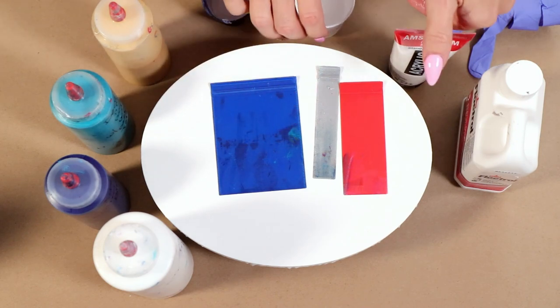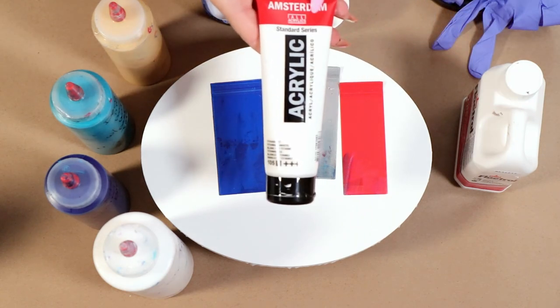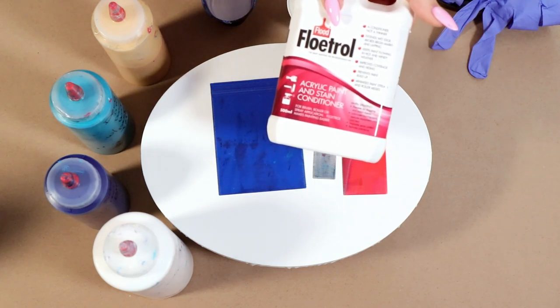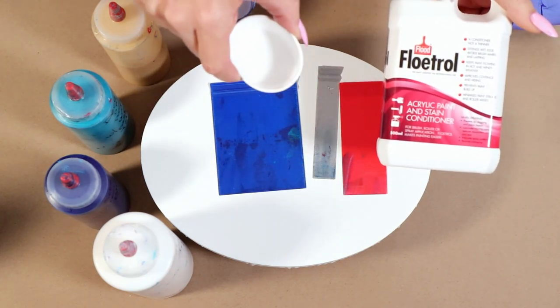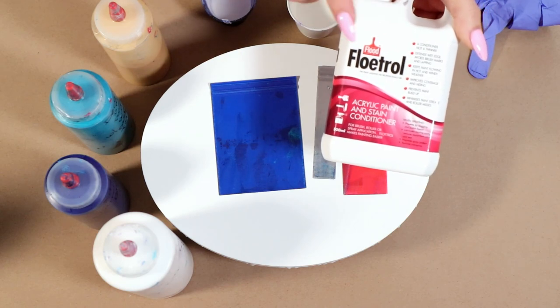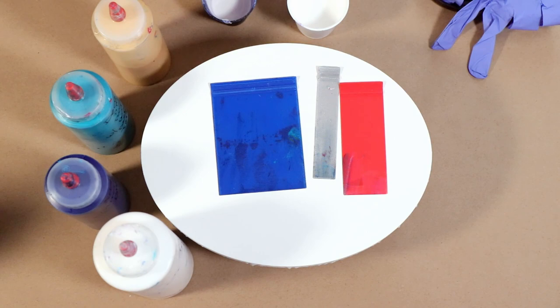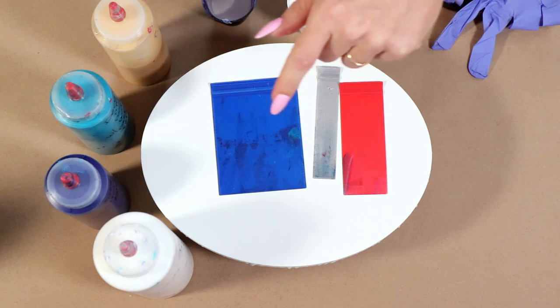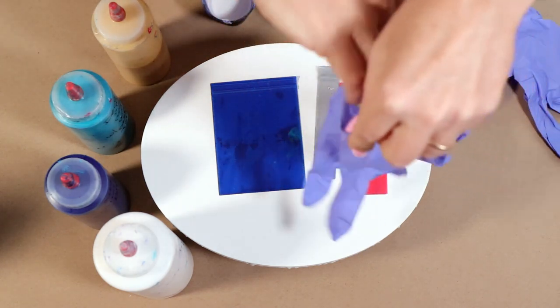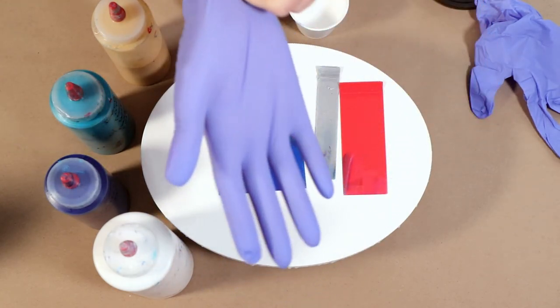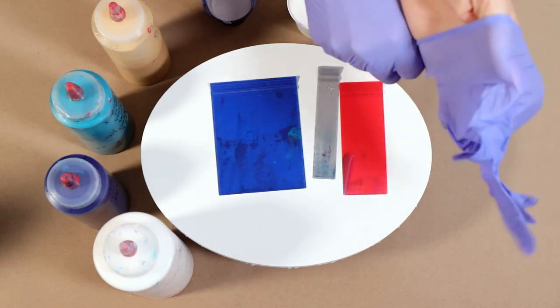My cell activator is from Amsterdam and it is a titanium white. The way that I mix that is with Australian Floetrol: one teaspoon of the titanium white to three tablespoons of the Australian Floetrol. You don't have to add any water to that.